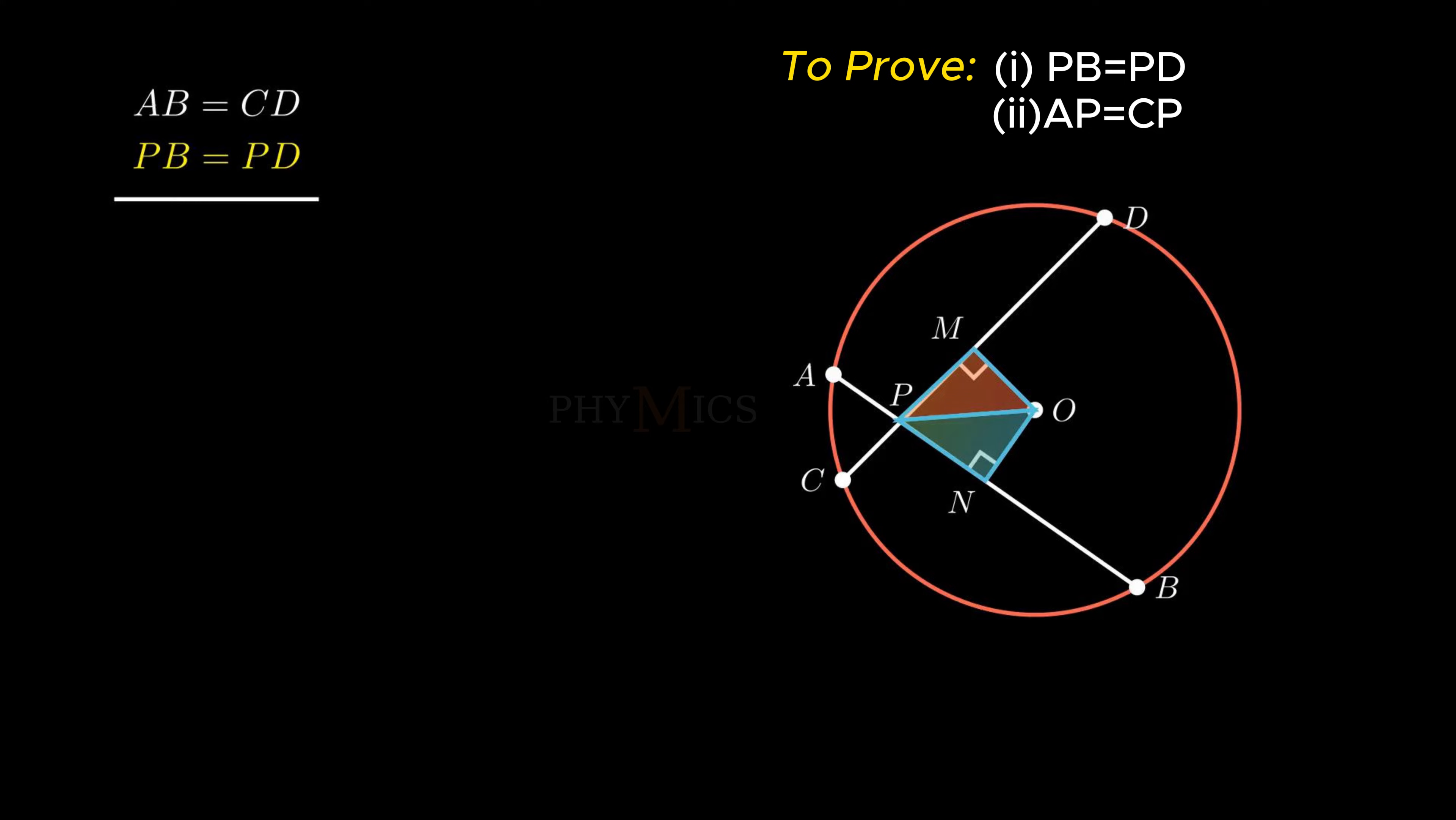On subtracting, we get chord AB minus major segment PB equals chord CD minus major segment PD. Thus, minor segment AP is proved equal to minor segment CP.